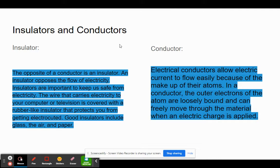When we talk about an insulator, we're talking about the opposite of a conductor. A conductor is going to be the opposite of an insulator. An insulator opposes the flow of electricity. Insulators are important to keep us safe from electricity. The wire that carries electricity to your computer or television is covered with a rubber-like insulator that protects you from getting electrocuted.